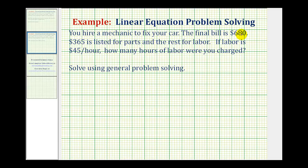The total bill is six hundred eighty dollars and of this amount, three hundred sixty-five dollars is listed for parts. So if we take six hundred eighty dollars and subtract three hundred sixty-five dollars, that would leave us with the total labor cost. And then knowing the labor cost, forty-five dollars per hour, we should be able to figure out how many hours we were charged. So for our first step, we're going to find the total labor cost by taking the total bill amount and subtracting the total parts amount. And this will give us the total labor charge.